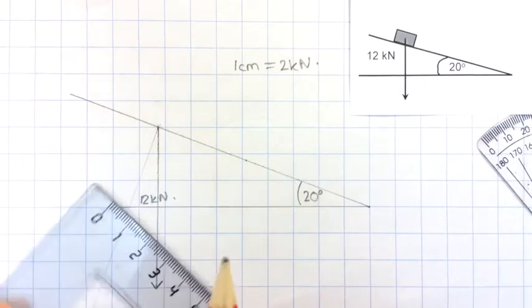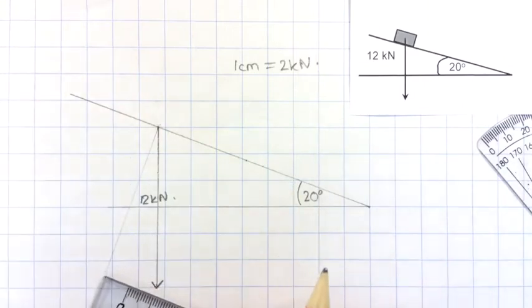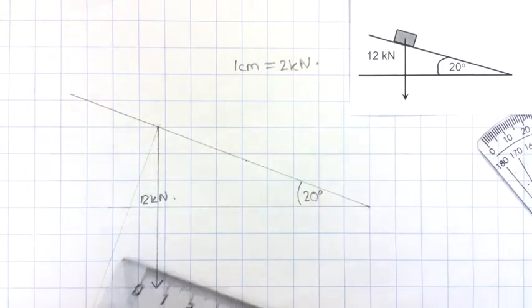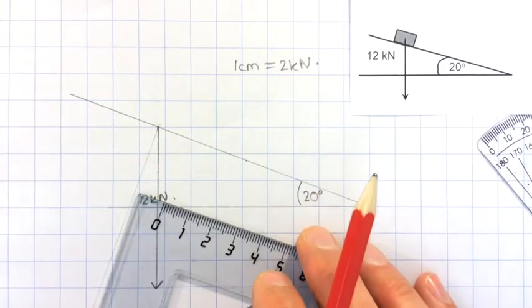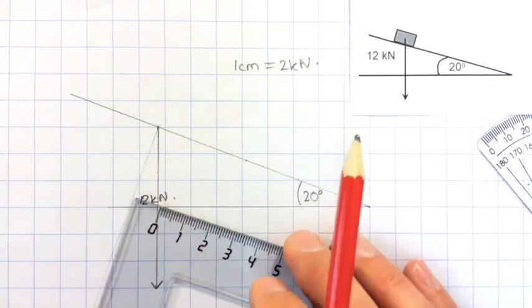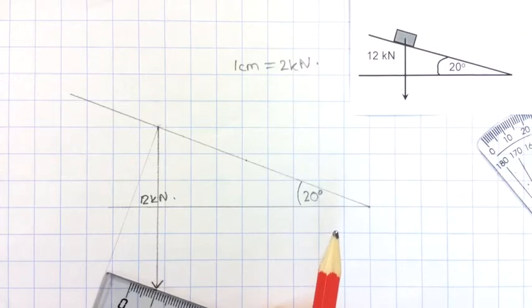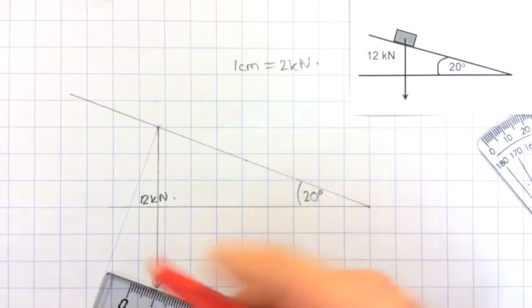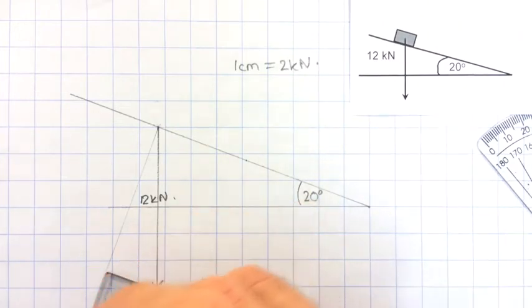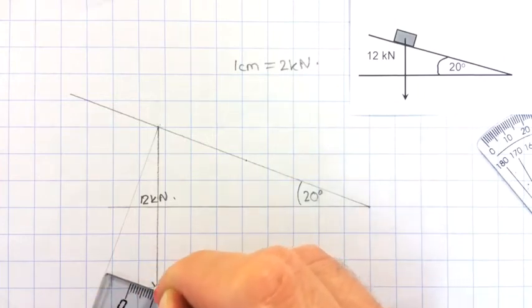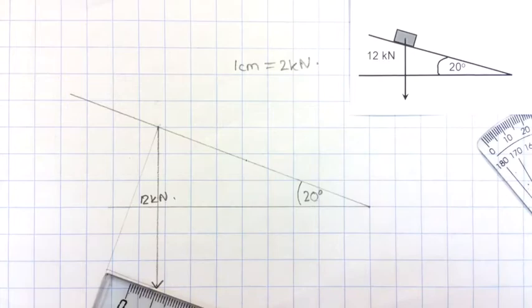And then I can rotate my set square round. And I'm going to line it up with my construction line and move it down until it's lined up with my construction line and the end here. It's really important that this bit is still lined up with the construction line. And then I can draw in the line there.